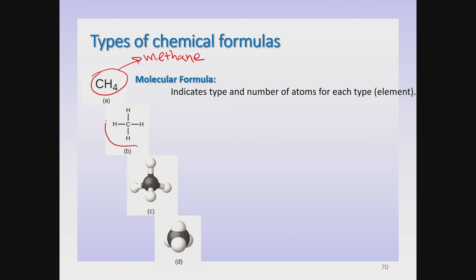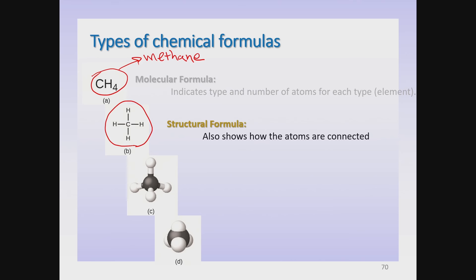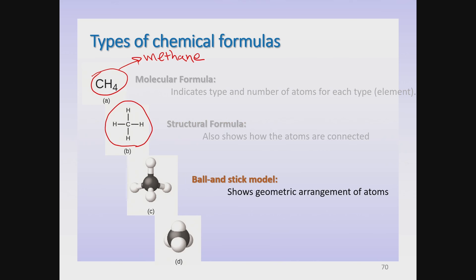Next we have a structural formula for the methane molecule. A structural formula shows you how the atoms of the different elements are connected together. Another way you can look at this molecule is with a picture called a ball-and-stick model, which is a better representation of where the atoms of the molecule are placed in space.